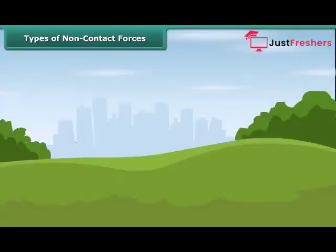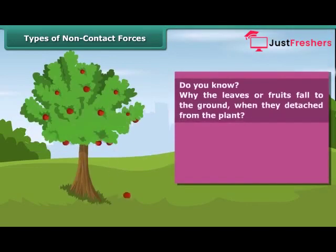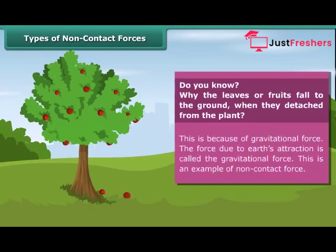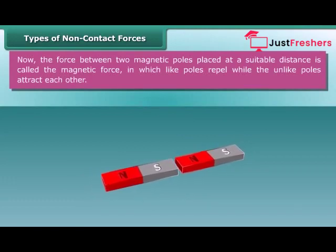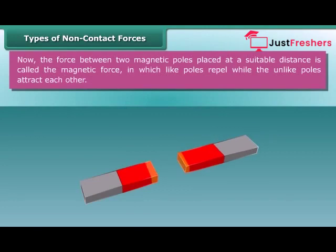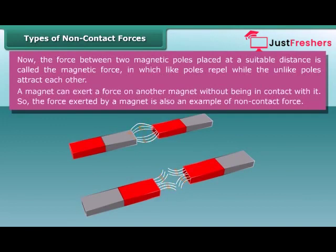Types of non-contact forces. The types of non-contact forces are: gravitational force, magnetic force, and electrostatic force. Why do leaves and fruits fall to the ground when detached from the plant? This is because of gravitational force — the force due to Earth's attraction, which is an example of non-contact force. The force between two magnetic poles placed at a suitable distance is called magnetic force, in which like poles repel while unlike poles attract each other. A magnet can exert force on another magnet without being in contact with it, so magnetic force is also a non-contact force.